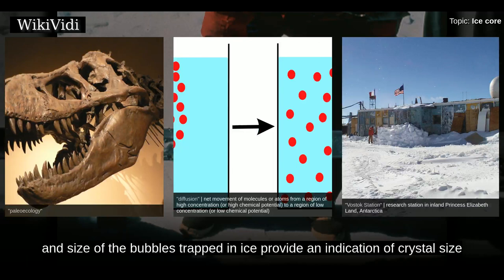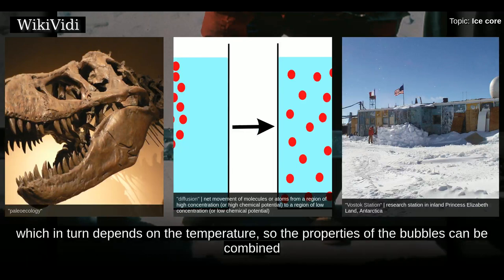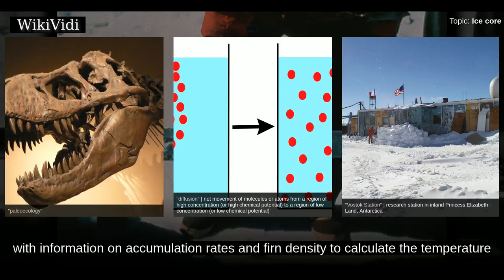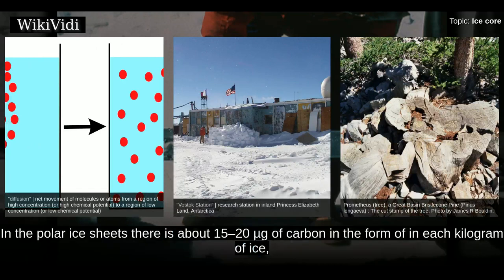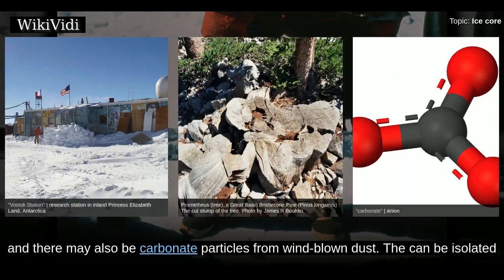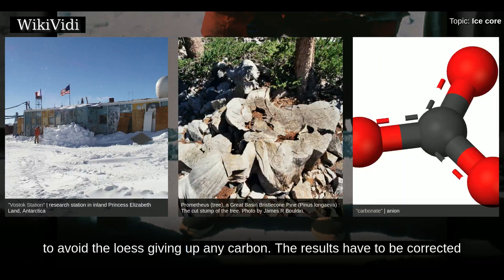The density and size of the bubbles trapped in ice provide an indication of crystal size. The size of a crystal is related to its growth rate, which in turn depends on temperature, so the properties of the bubbles can be combined with information on accumulation rates and firn density to calculate the temperature when the firn formed. Radiocarbon dating can be used on the carbon entrapped in polar ice sheets, where there is about 15–20 micrograms of carbon per kilogram of ice. There may also be carbonate particles from windblown dust that can be isolated by subliming the ice in a vacuum.